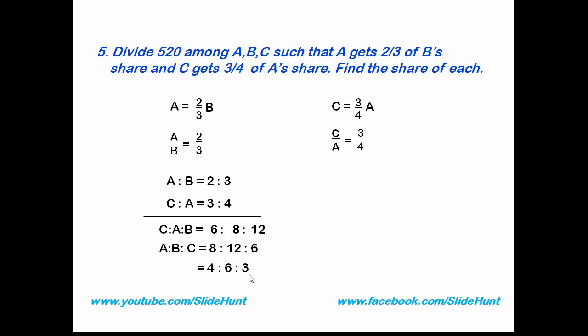Next we find the share of A, B, and C. A share equals total number of rupees multiplied with ratio of A by sum of all ratios. Ratio of A is 4 and the sum of this ratio is 13: 4 plus 6 is 10, 10 plus 3 is 13. Now cancel 520 with 13, and we get 40. 40 times 4 is 160. So A share is 160. Similarly, B share is 520 into 6 by 13, because here B share is 6: 40 times 6 is 240. And C share is 520 into 3 by 13: 40 times 3 is 120.